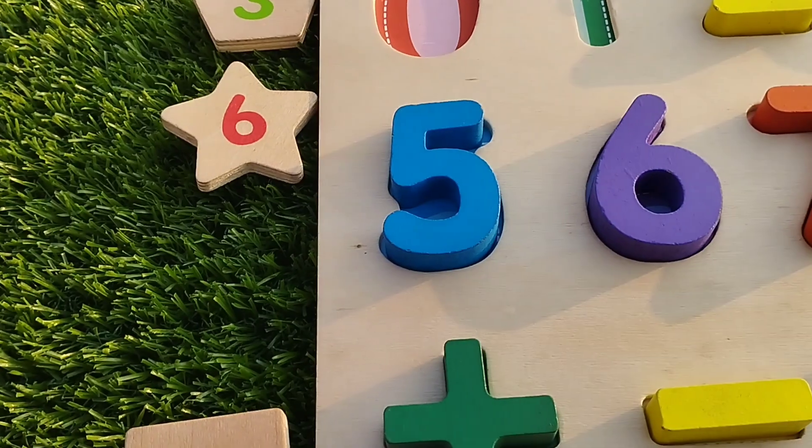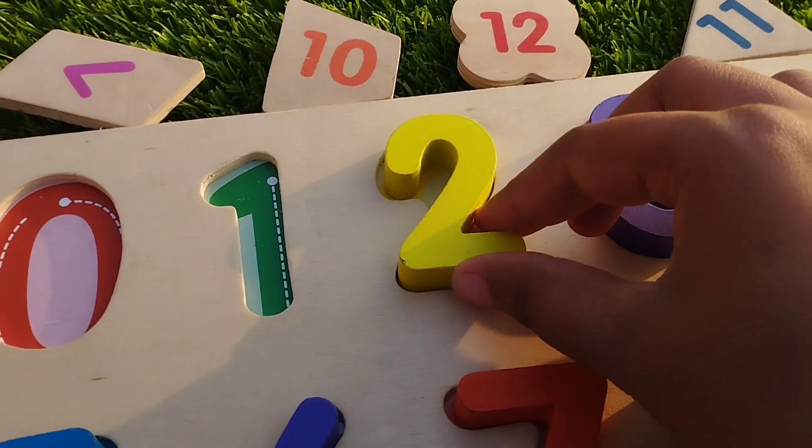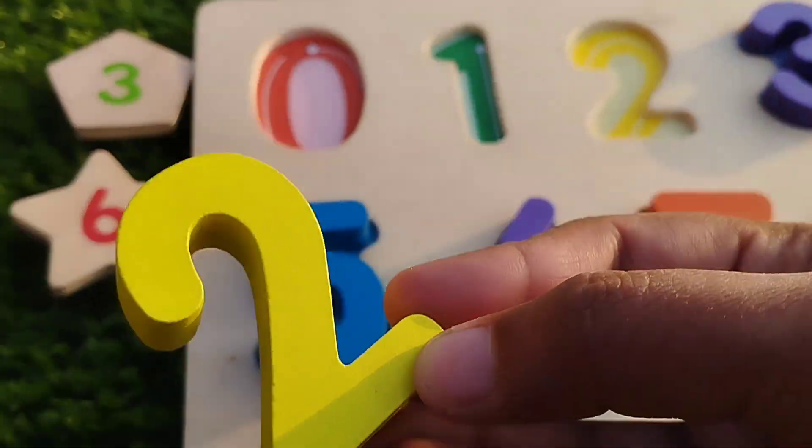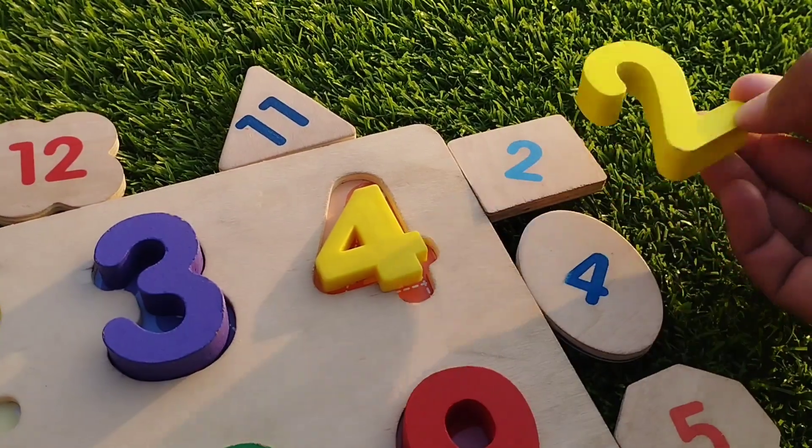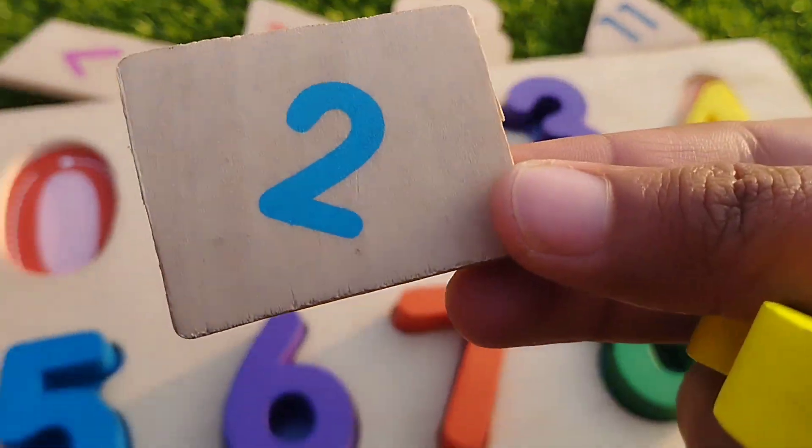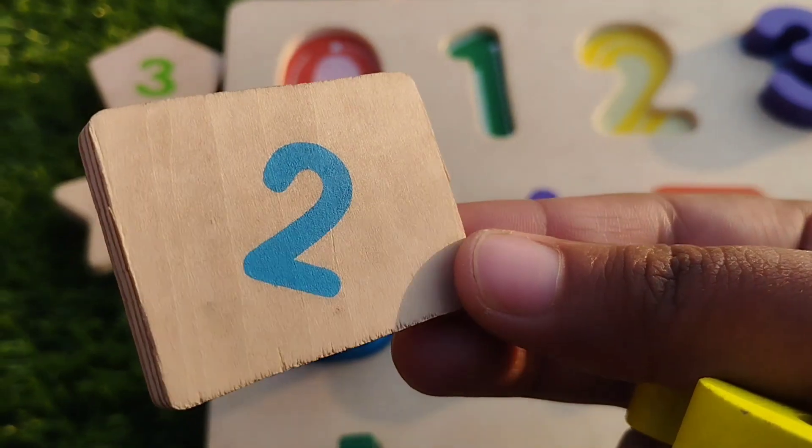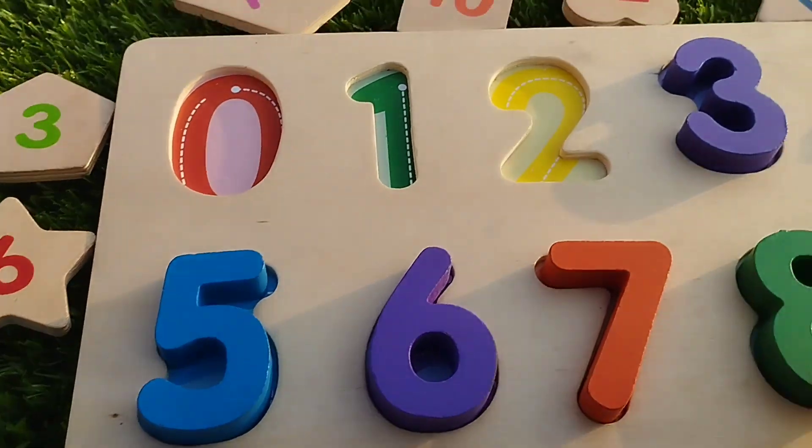And the shape is hexagon. The next number is number two. Number two. This is rectangle shape. The number is two.